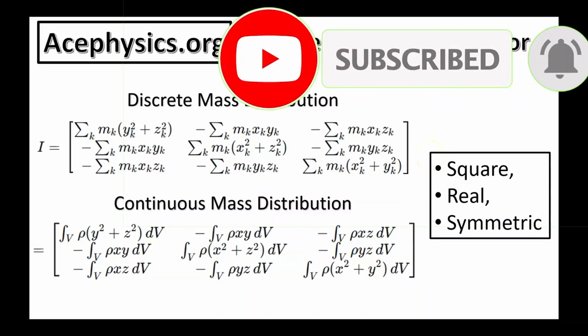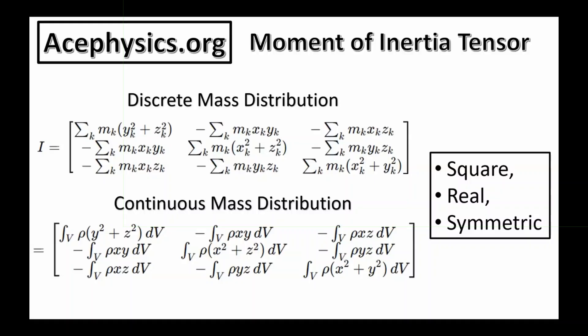The moment of inertia tensor is shown below. This lesson assumes familiarity with standard matrix operations. In nearly every textbook, the tensor is introduced only after a long technical derivation, which often leaves students unsure of what the tensor actually represents. My goal is to take a different path: rather than starting with the derivation, I'll simply present the tensor for both discrete and continuous mass distributions, show how to use it in a real example, and then derive it later. Notice that the diagonal entries are exactly the principal moments of inertia we previously discussed.